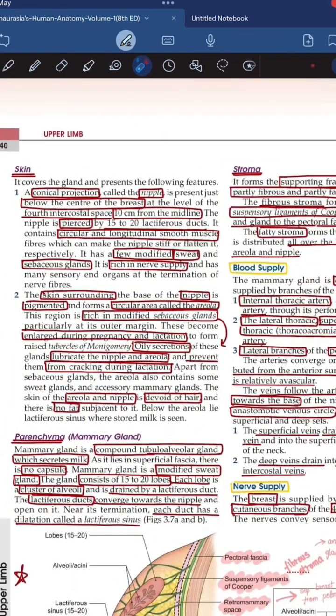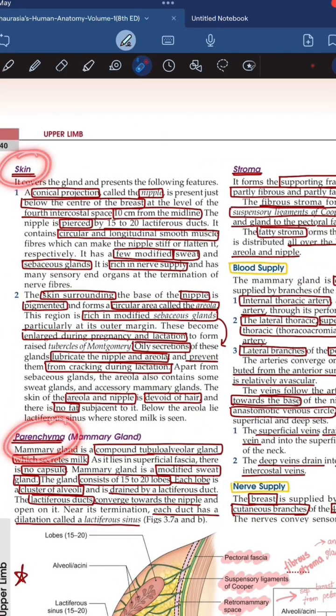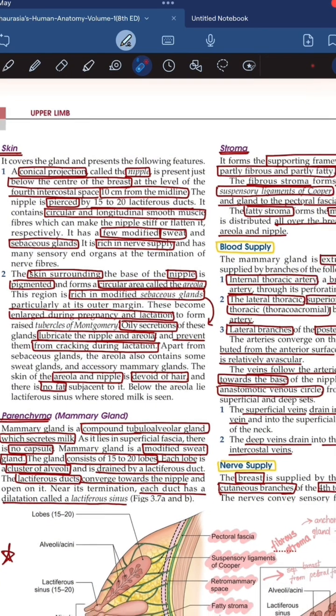Now structure of breast is a heading under which we have some subheadings such as skin, parenchyma, and stroma. If you remember this much, then pointers are just the features that stand out in those headings.